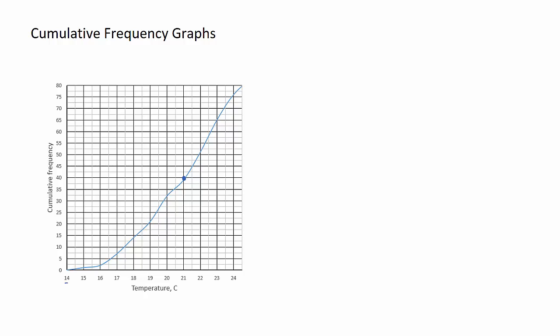Looking at the number of days on the left and temperature on the horizontal axis, this data point means there were 40 days in which the temperature was less than 21 degrees Celsius. It doesn't mean there were 40 days on which it was exactly 21 degrees—it means there were 40 days with temperature less than 21. The way to shade that region would look like this, shading all of this region.